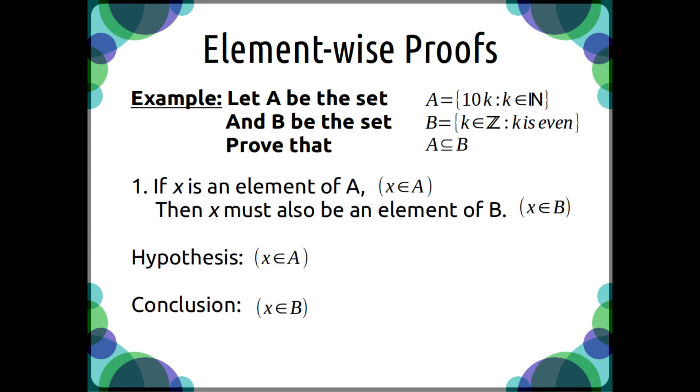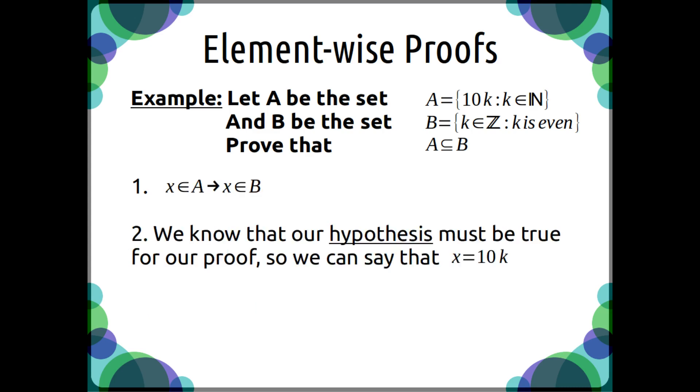So we'll form the statement, if x is an element of A, then x must also be an element of B. So our hypothesis is x is an element of A, and our conclusion is x is an element of B. To prove that this is true, we need our hypothesis to be true, and then we need to show that the conclusion is also true. So we'll start out by saying the hypothesis is true, x is an element of A, so therefore x is equal to 10 times k.